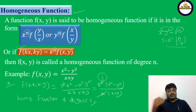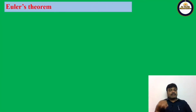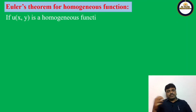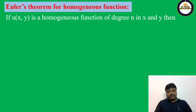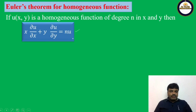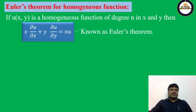Based on homogeneous functions, we have one theorem — Euler's theorem. Statement: if u(x,y) is a homogeneous function of degree n in x and y, then x·∂u/∂x + y·∂u/∂y = n·u. This is known as Euler's theorem.